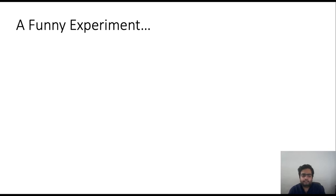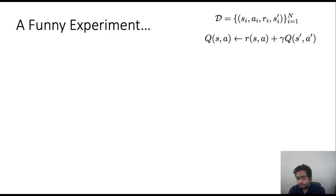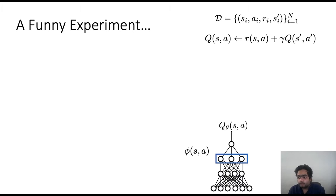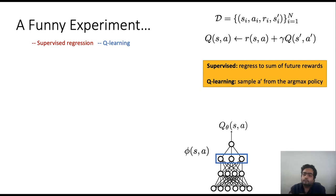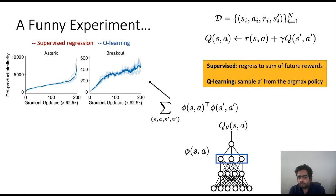We start with a somewhat funny experiment. We take the offline data set and run Q-learning on it. The Q-function is a deep neural network, and we denote the last-but-one layer feature as the representation learned by the Q-function. We compare two algorithms: a supervised regression baseline, where the goal is to find a Q-function by regressing to the sum of future rewards in a trajectory, and standard Q-learning with TD learning sampling A' from the policy that maximizes the Q-function. We measure the dot product of the learned features at (s,a) and (s',a').